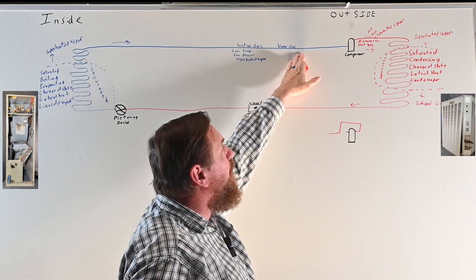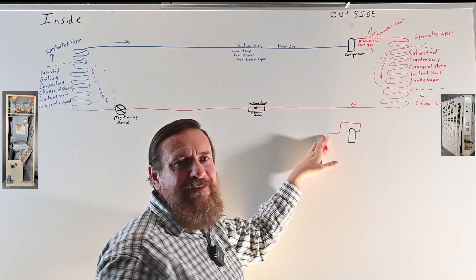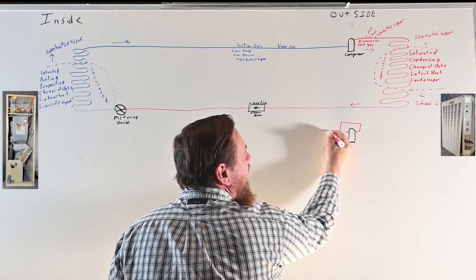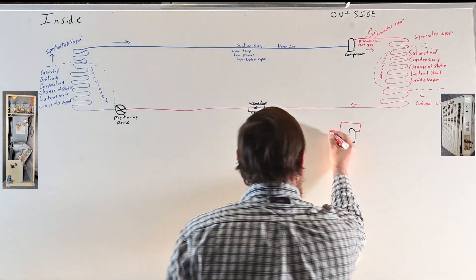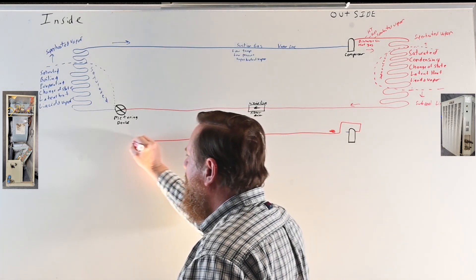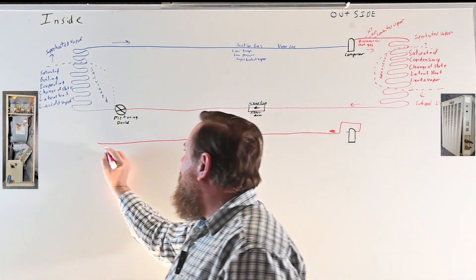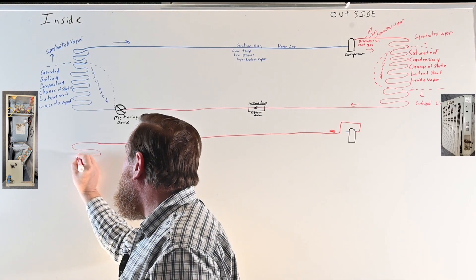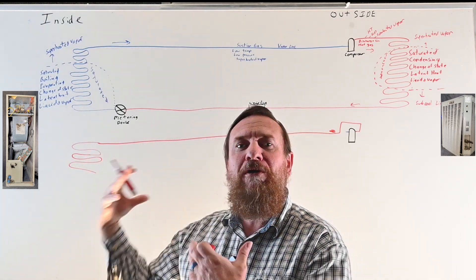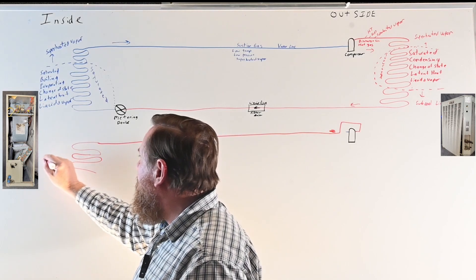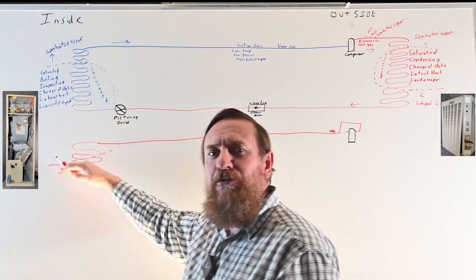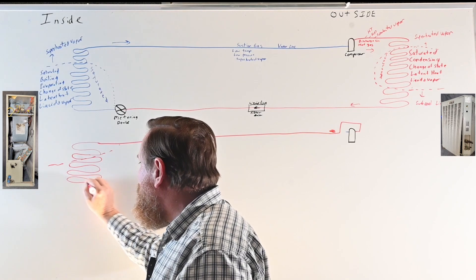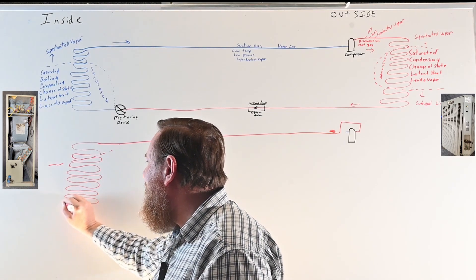It's still vapor, but now it's high temperature, high pressure, superheated vapor instead of low temperature, low pressure. We take this refrigerant and send it inside in the opposite direction — through the big fat line to the inside unit. We send it through what was once the evaporator coil, now acting as the condenser. It's warmer than the temperature of the air in the house, so the first thing we do is de-superheat it, then make that refrigerant change state from a vapor to a liquid.